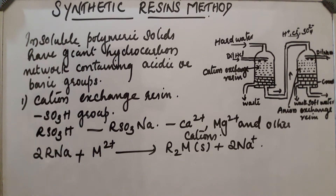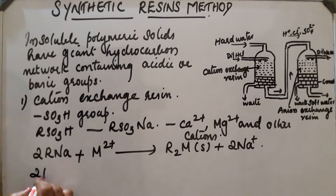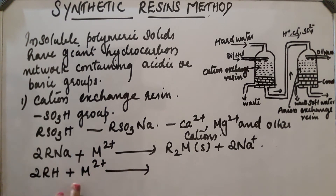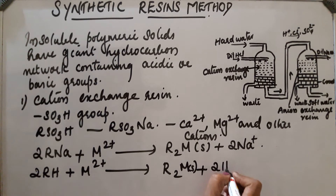In order to obtain pure demineralized water free from all soluble salts, we have to use both the cation exchange resin and the anion exchange resin. The cation exchange resin removes all cations and the anion exchange resin removes all anions. Using 2RH resin on reaction with M2+ metal ions present in hard water gives R2M + 2H+.